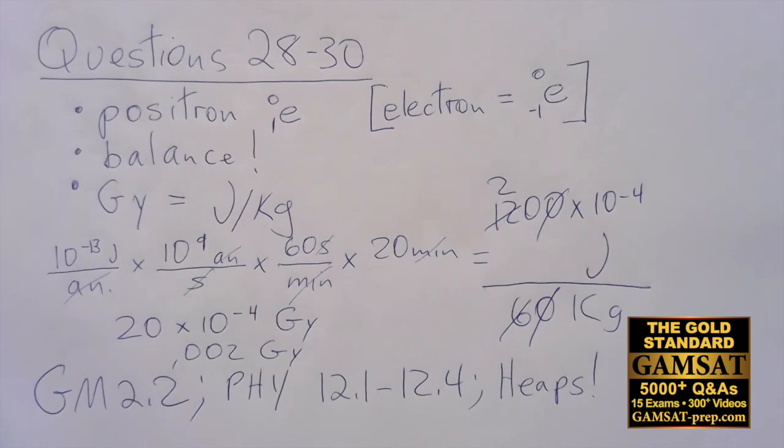Now moving on to question 30, which is another super easy one because we're just looking for balance. For answer choice A, in the superscripts we have 18 plus 1, that's 19 going to 18 plus 0, so it doesn't work. Subscripts also don't work, we have 8 plus 1 going to 9 plus 1, so that's 9 going to 10, doesn't work.